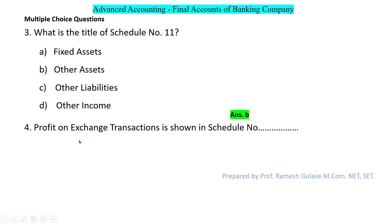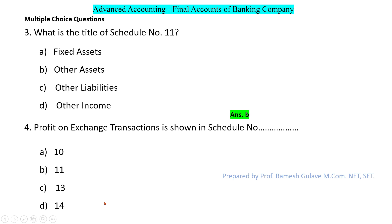The next question says profit on exchange transactions is shown in which schedule number — options are 10, 11, 13, and 14. Profit on exchange transactions is shown in schedule number 14, so option D is the right answer.